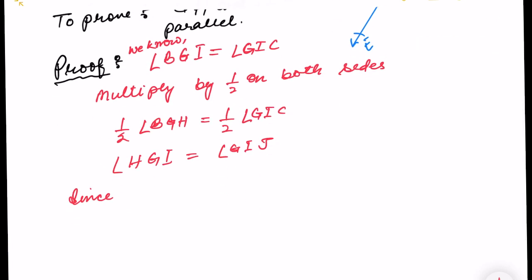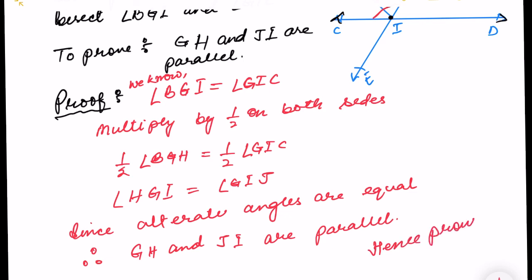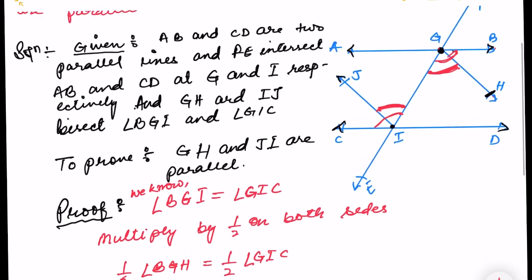Since alternate angles are equal, therefore GH and JI are parallel. I hope you understood the concept. That's all, thank you so much — we will meet in the next video.